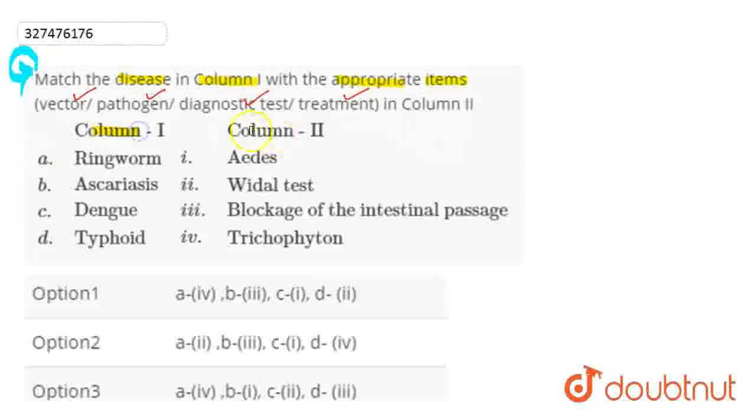Let's begin with Column 1, which is ringworm. If we talk about ringworm, then it is a fungal disease. So we will match it here with the fourth, which is Trichophyton. Because, as we know, Trichophyton is the genus of fungi which are included in the parasitic varieties, like we are taking the example here, ringworm.